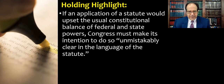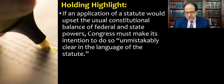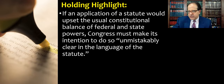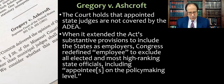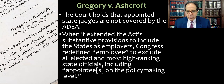The court holds that the statute would upset the usual constitutional balance of federal and state powers, and therefore, if we're going to take the statute and apply it in that way, Congress has to make its intention to do so unmistakably clear in the language of the statute. The court decides it really doesn't want to go down the road of having this federal statute basically upend a state constitutional provision that was approved by voters by referendum. So the court instead decides to interpret the statute as just not applying to the state judges.